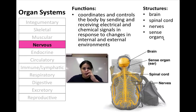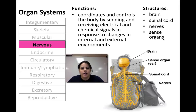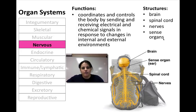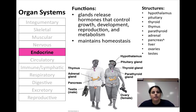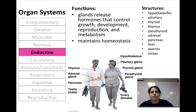The nervous system coordinates and controls everything going on in your body through electrical and chemical reactions — it's how your cells talk to each other and how you maintain a homeostatic balance. Your brain, spinal cord, nerves, eyes, and different sense organs like smell or taste are all part of the nervous system. The endocrine system is pretty much all the glands in your body that release chemical hormones that enable you to grow, develop, reproduce, and maintain your metabolism. Key glands include the hypothalamus, pituitary, thyroid, thymus, parathyroid, adrenal, pancreas, liver, ovaries, and testes.